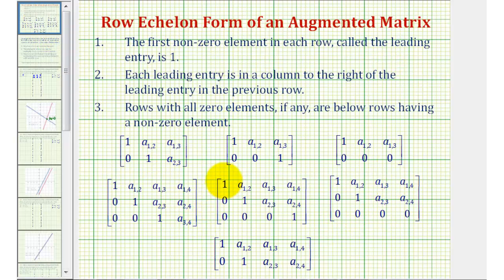We have several examples here below. Notice the first nonzero element in each row, called the leading entry, is one.